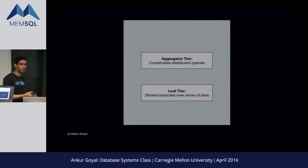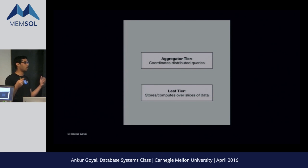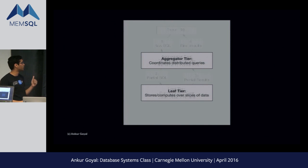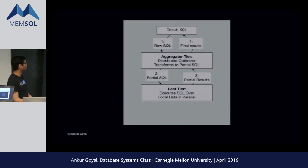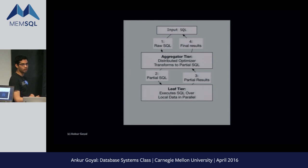You send a query to an aggregator. It figures out what it needs to do across the cluster, computes across the cluster, and returns results back to aggregators or talks to other leaves. The aggregator merges together the results and sends them back to the client. Input SQL goes into the aggregator, gets converted to some partial SQL-like thing — actually a superset of SQL — which the leaves execute. The leaves send partial results back to the aggregator, which combines them and sends final results to the client.